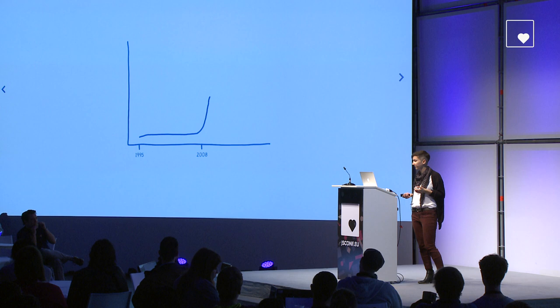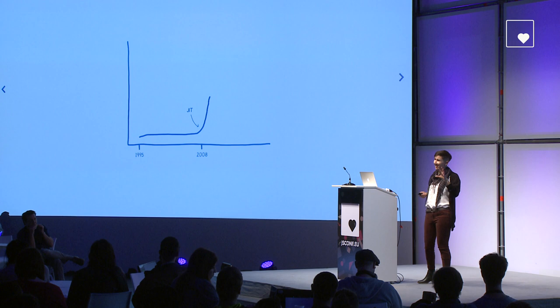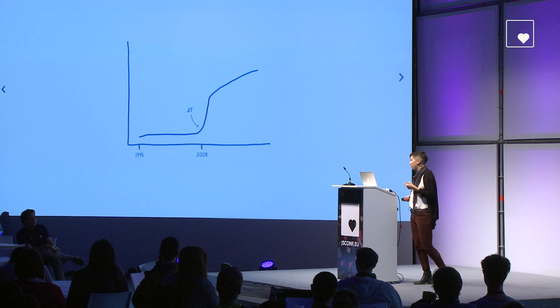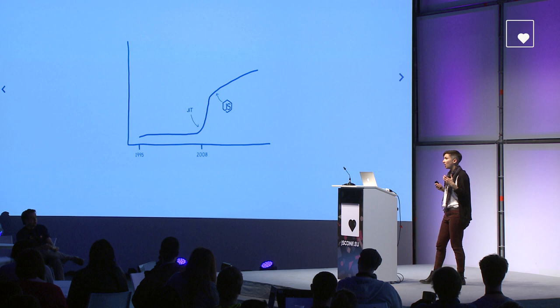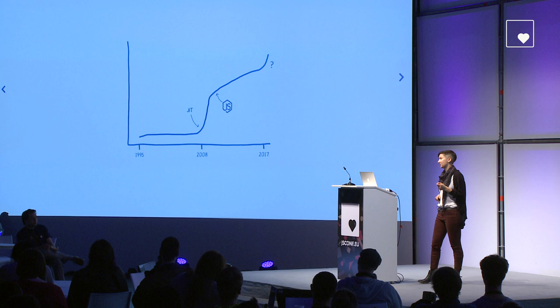With the introduction of the JITs, you see an inflection point in the performance of JavaScript. All of a sudden, JavaScript code was running about ten times faster than it had previously, and these performance improvements continued over the next decade. With this improved performance, you start seeing JavaScript being used for things like Node and Electron. That's why it's interesting that we may be approaching another one of these inflection points in the speed of code running on the web with WebAssembly.